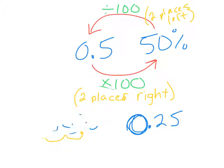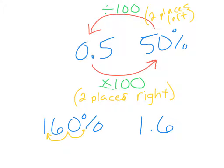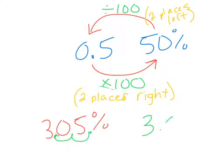Keep that in mind as you do these. If I gave you 160% — another whole number, so the decimal starts right behind the 0 — converting that to a decimal by moving two places to the left makes that 1.6. Another example: 305% — decimal's behind the 5, so moving it two places to the left makes it 3.05. As long as you're moving two places to the left, you are converting your percent to a decimal.